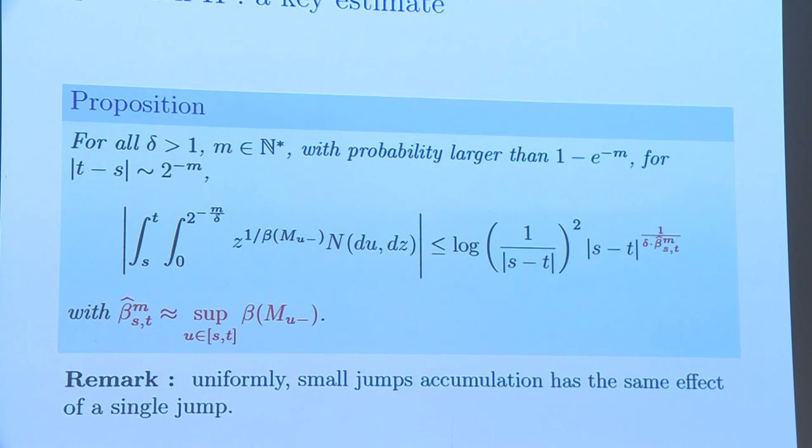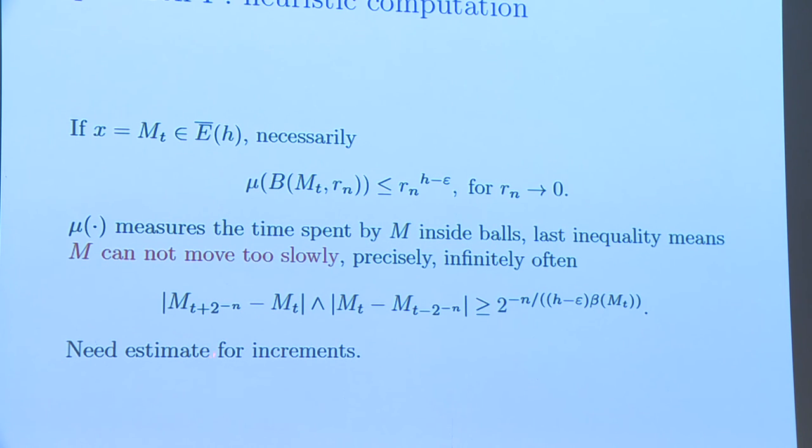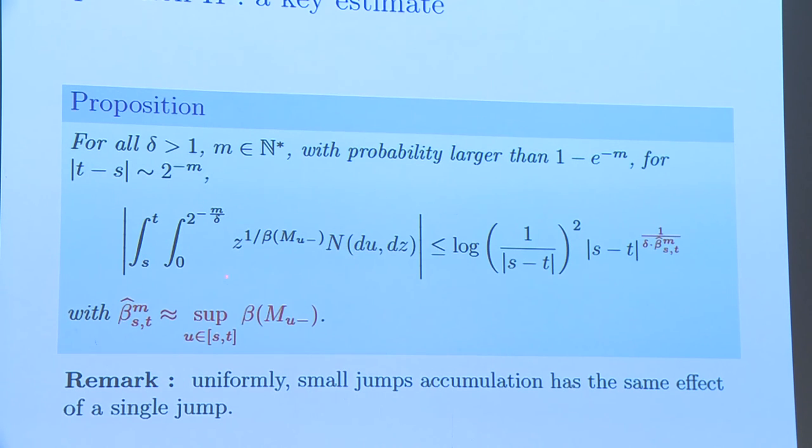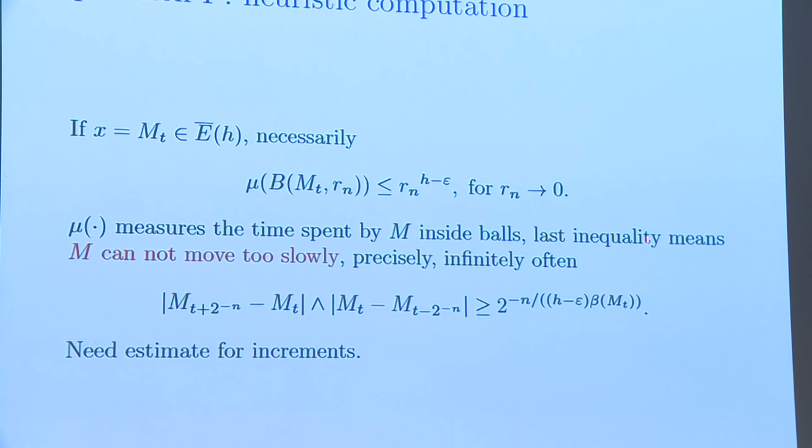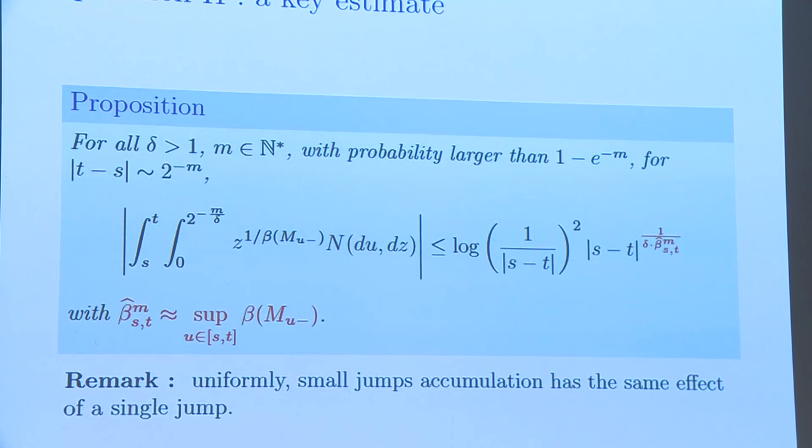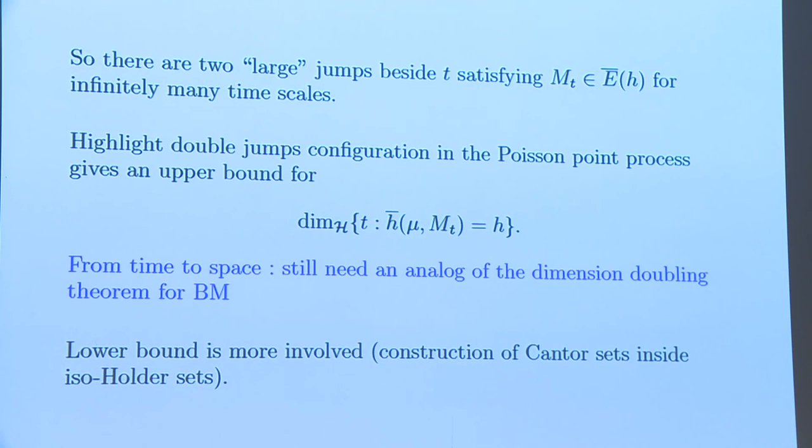The observation is the following. For smaller increment, for smaller jumps, accumulation of smaller jumps, we have this upper bound. And for the total increment, we have this lower bound. It means that there are some large jumps. The smaller jumps accumulation only gives this order. This is the big order. Definitely there are some large jumps. Our conclusion is that there are two large jumps beside the time t, such that every m_t in this set should satisfy this two jumps configuration beside it.